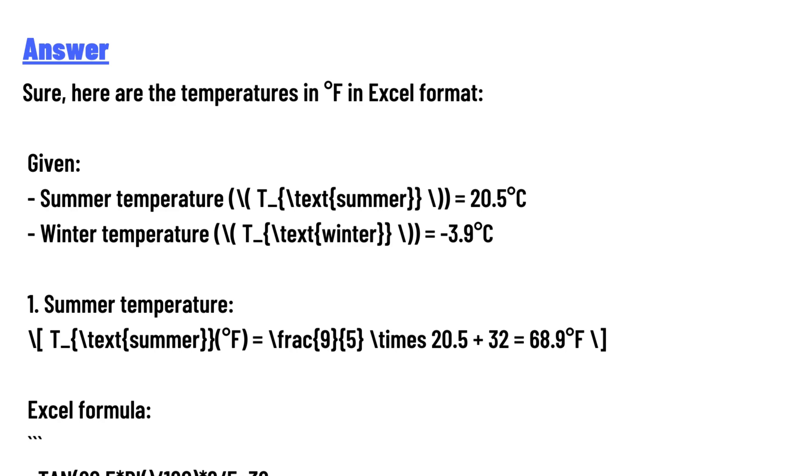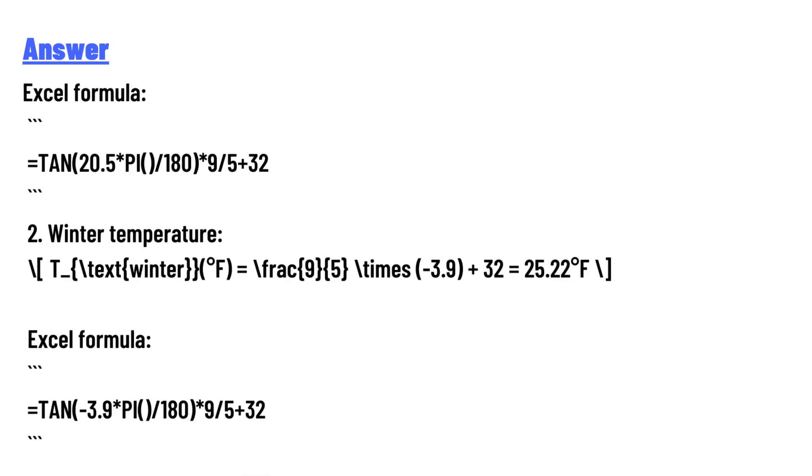For summer temperature T text summer Fahrenheit equals 9/5 times 20.5 plus 32 equals 68.9 Fahrenheit. Excel formula: TAN into 20.5 multiplied by PI/180 multiplied by 9 over 5 plus 32.